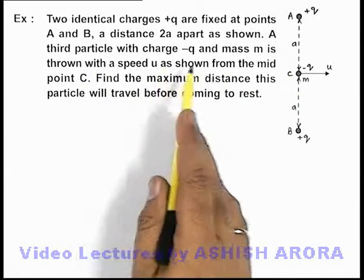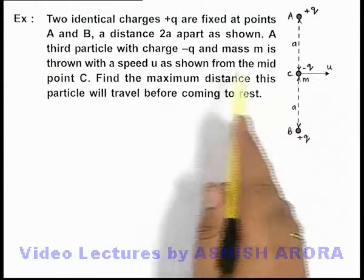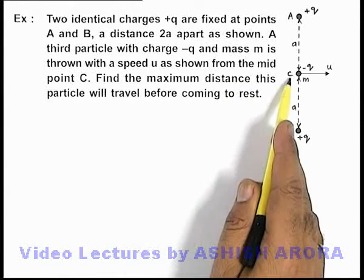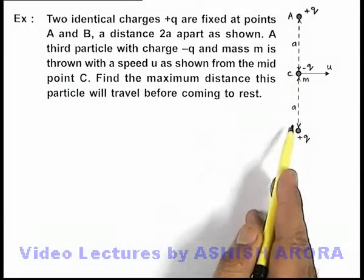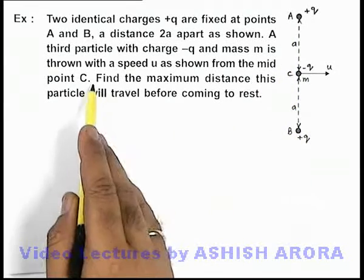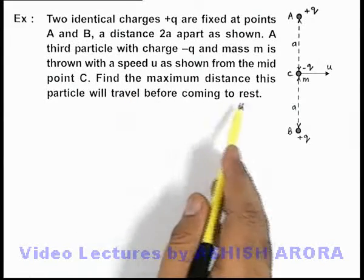A third particle with charge -q and mass m is thrown with a speed u as shown from midpoint C, that is, at an equal distance a from both of these charges A and B. We are required to find the maximum distance this particle will travel before coming to rest.